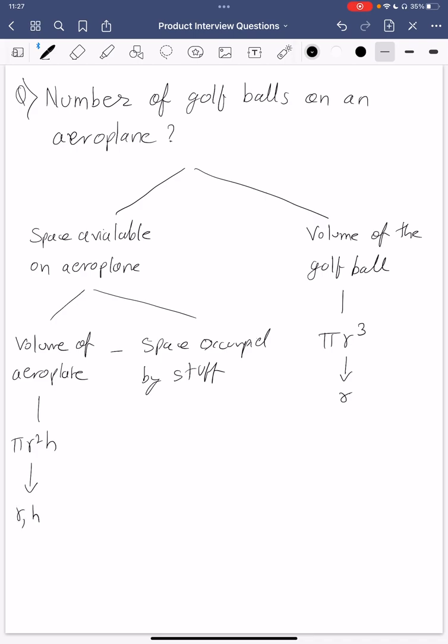So this is r1 rather and this is h dash. Now space occupied by stuff can be a couple of different things. One is seats, second is some compartments which can be the controls in cockpit, then lavatories.